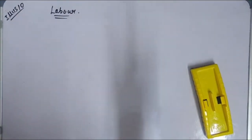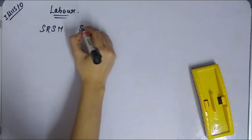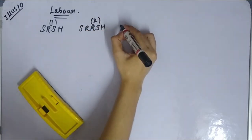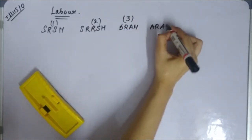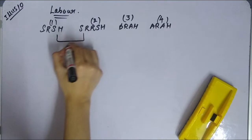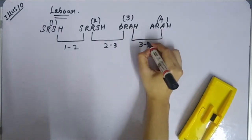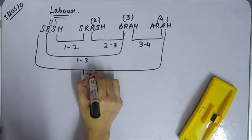The labor variance framework uses SRSH (standard rate, standard hours), SRAH (standard rate, actual hours), and ARAH (actual rate, actual hours). The relationships between these are: 1 to 2, 2 to 3, 3 to 4, 1 to 3, and 1 to 4.